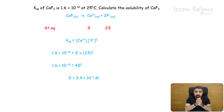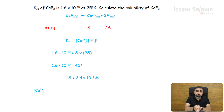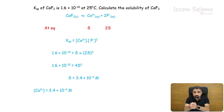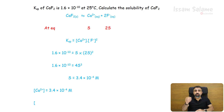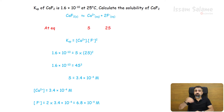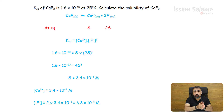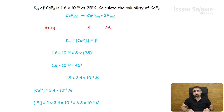The solubility is 3.4 × 10⁻⁴ molar. The concentration of calcium ions equals the solubility: 3.4 × 10⁻⁴ molar. But the concentration of fluoride ions is double the solubility: 6.8 × 10⁻⁴ molar. So, given the Ksp, we can easily find both the solubility and the concentration of any ion.